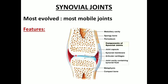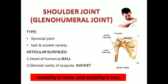Once this hyaline cartilage is replaced by bone through ossification, the joint space becomes much more reduced. There is then a chance of bone-to-bone communication, which causes friction and inflammation. This condition is commonly called osteoarthritis.